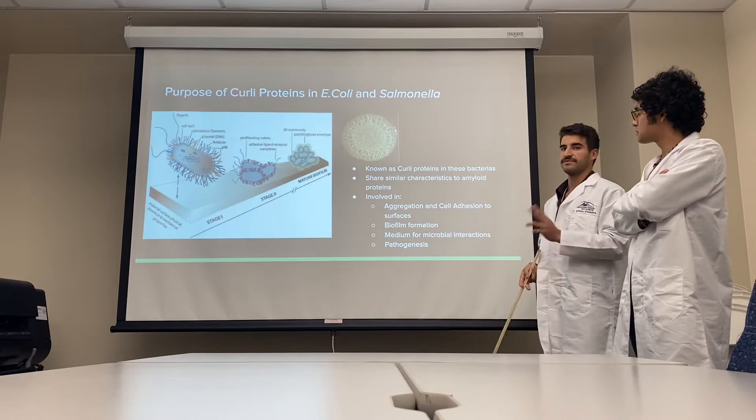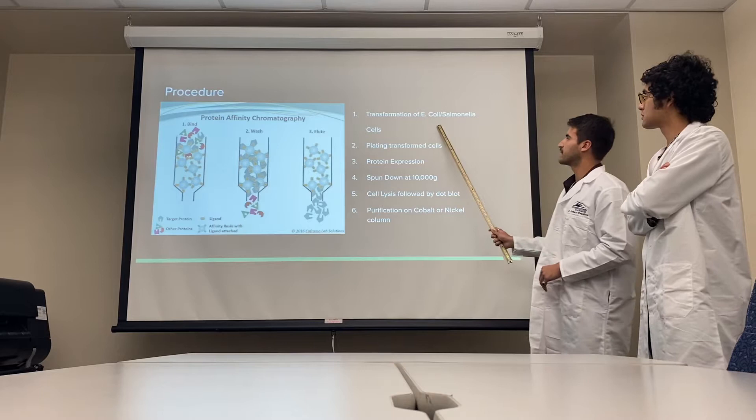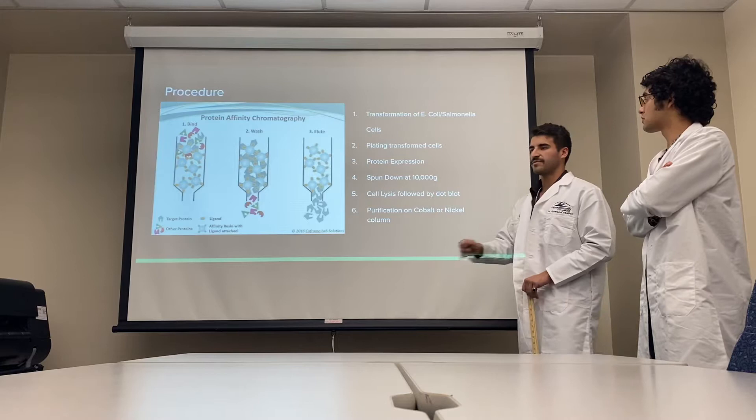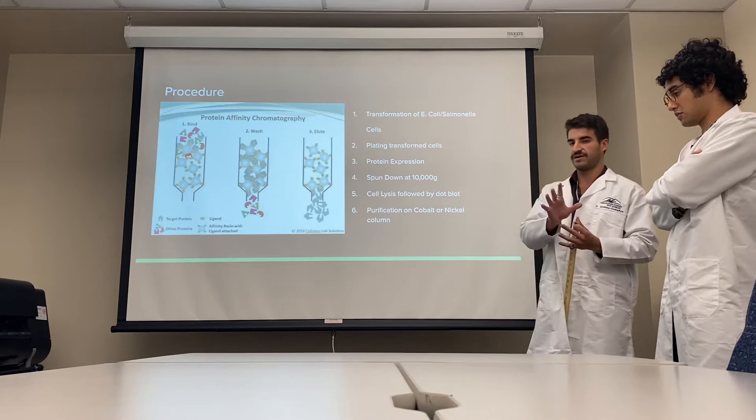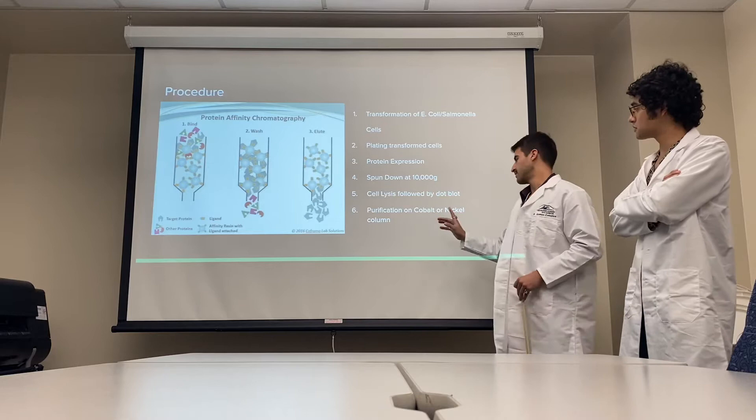We transformed regular E. coli and Salmonella cells using a CSGE plasmid, then plated them and expressed them in LB broth. We then spun it down and isolated a cell pellet, lysed the cell pellet, followed it up with a dot blot which tracks whether the protein is in the pellet or the supernatant. We then purified this on a cobalt or nickel column, and found that a nickel column is typically the most successful.